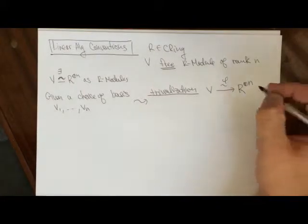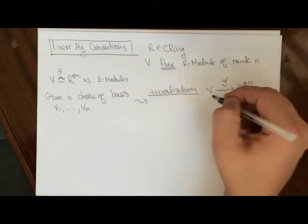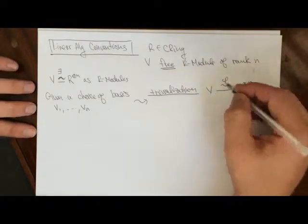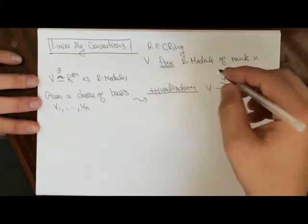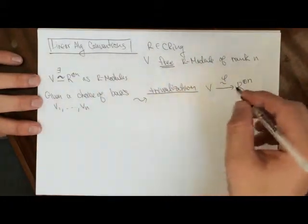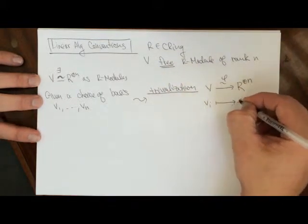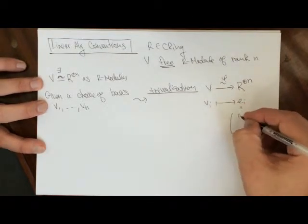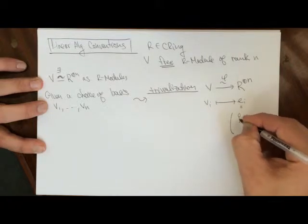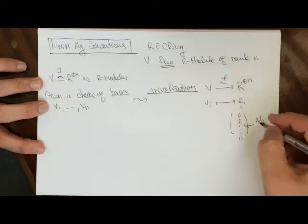If we were going to do this in infinite dimensions, it's convenient to make it a topological vector space. Another thing about this trivialization: sometimes we say that v_i maps to e_i, where e_i is the vector with zeros everywhere except for the i-th entry. This is the i-th standard column vector.